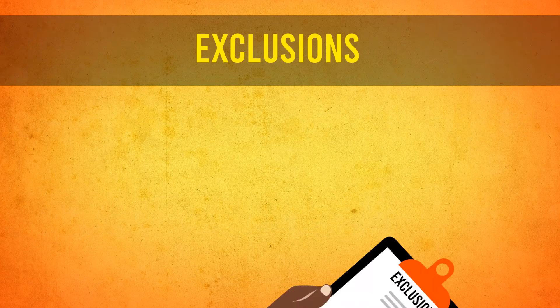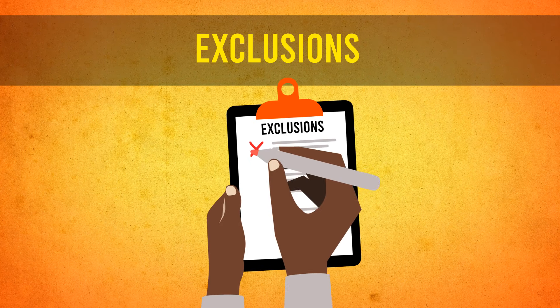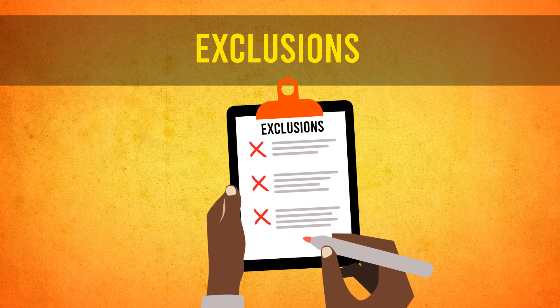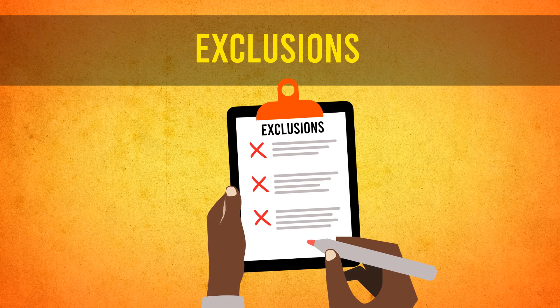C. Exclusions. This outlines what the policy does not cover. It is also a way of clarifying what is covered.